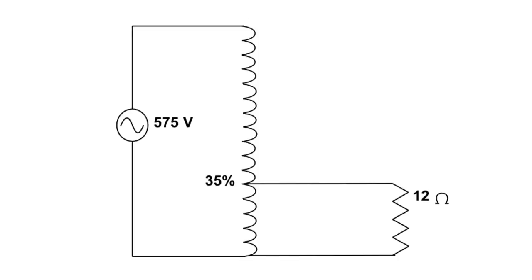This is going to be a walkthrough of an auto transformer, a step-down auto transformer. What we have here, we have a 575 volt source, and we have a load connected across 35% of the windings.